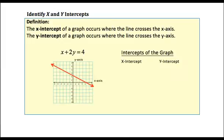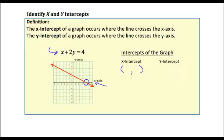I've graphed this equation x plus 2y equals 4. The intercepts are simply where this graph crosses the x and y-axis. Looking at the x-axis, we can see this graph is crossing the x-axis right here — the line crosses at positive 4. That's all the x-intercept is. To identify that value, I write it as an ordered pair, because it takes two coordinates to identify any point on the graph.